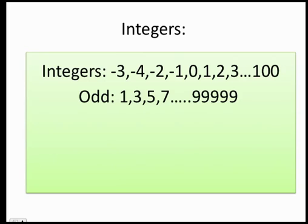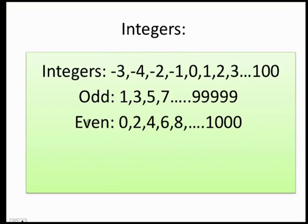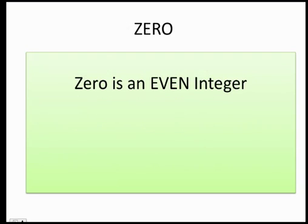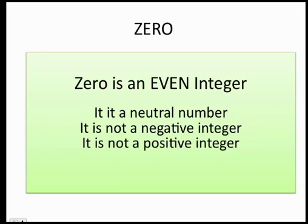When they tell you an odd integer, think about 1, 3, 5 — basically any odd number. For an even integer: 0, 2, 4, 6, 8, 1000, and so on. Very important: zero is an even integer. It is a neutral number — it's not positive, it's not negative — so when you hear the word zero, think even integer.